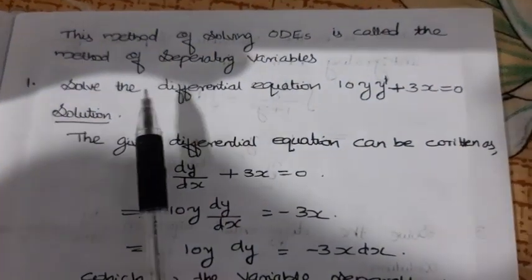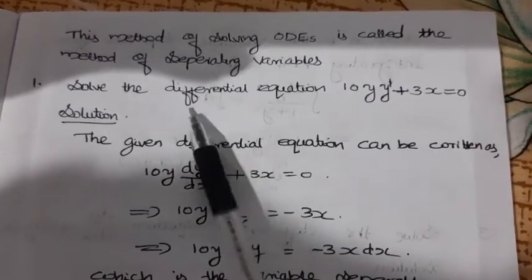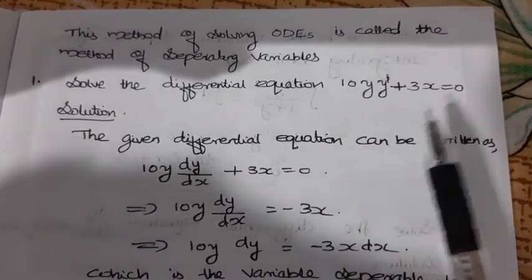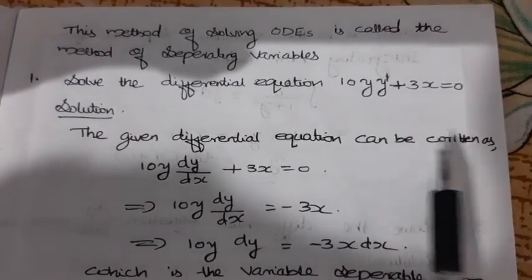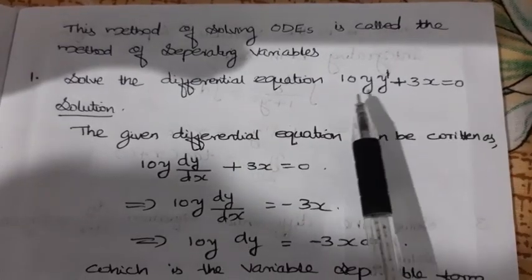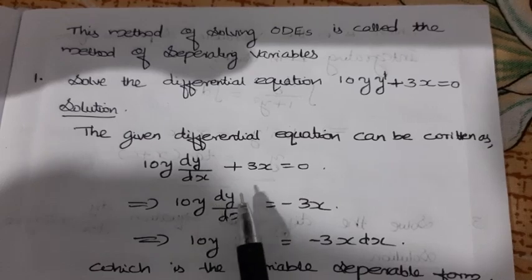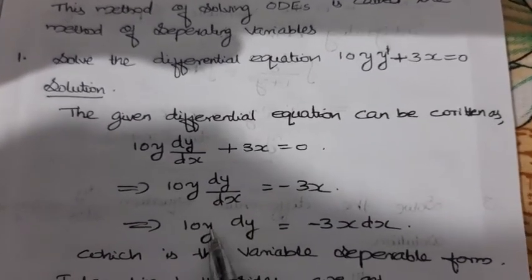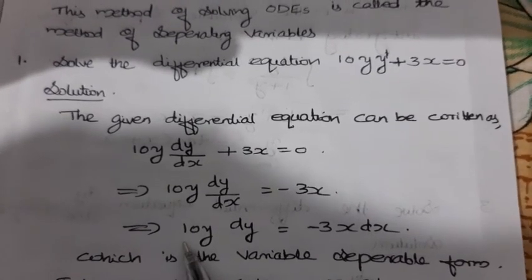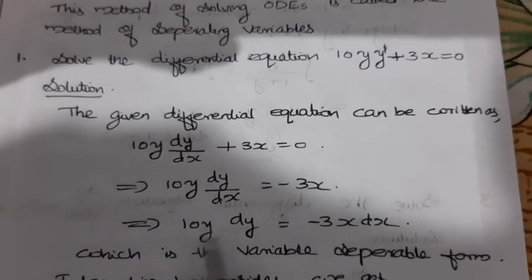For example, solve the differential equation 10y·y' + 3x = 0. The differential equation can be written as 10y·y' + 3x = 0, which implies 10y · dy/dx = −3x. Then the x terms and y terms are separated.